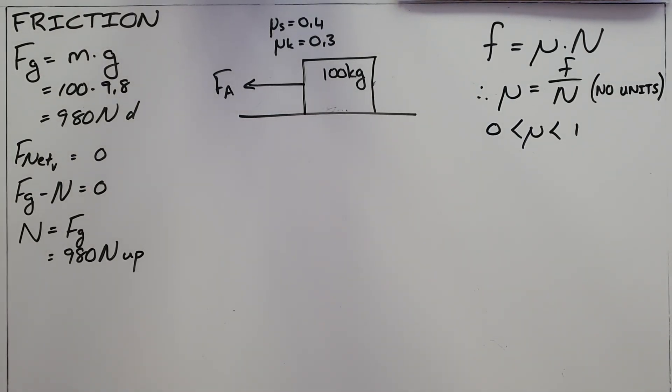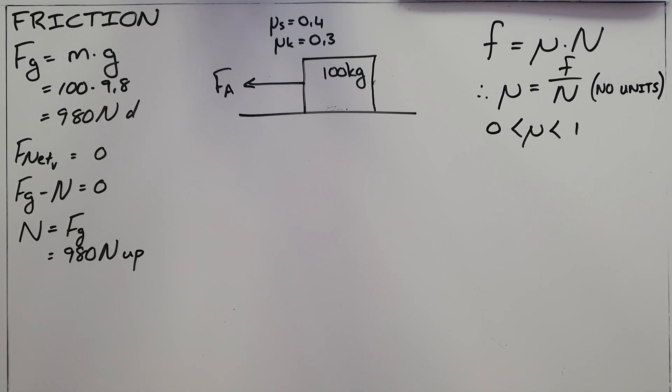Friction is the force that opposes the motion of an object and acts parallel to the surface with which an object is in contact.